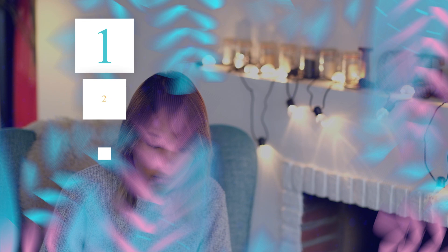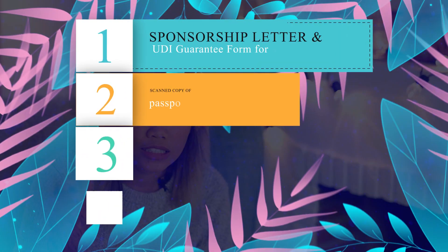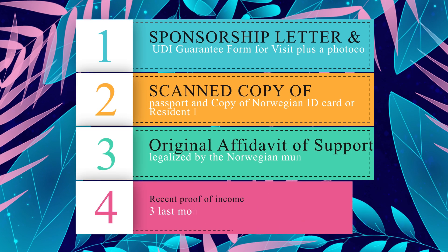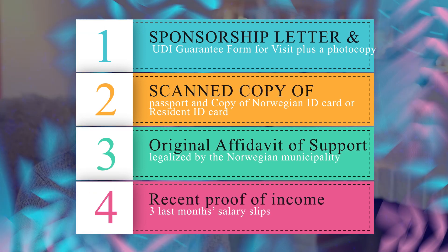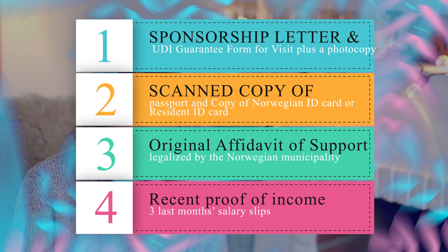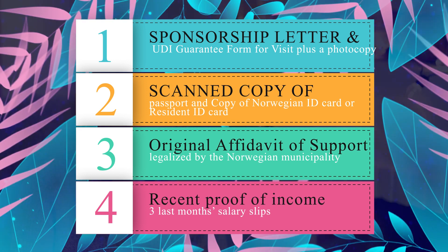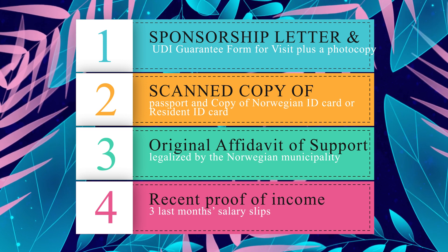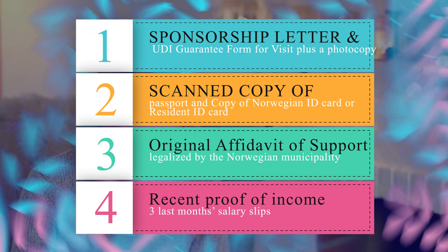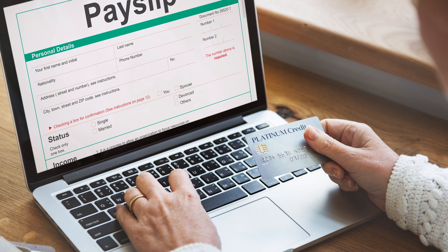Make sure you have the following supporting documents from the sponsor. The first one is a proof of sponsorship or the UDI guaranteed form, which you can download from the link in the description below. Also make sure to request a scanned copy of the passport and copy of the Norwegian ID card or resident ID card of the sponsor, and an original affidavit of support legalized by the Norwegian municipality where your sponsor is registered. Make sure to also request a recent proof of income — either 3 months of recent payslips, or if the sponsor has no job, 6 months of recent bank statements.